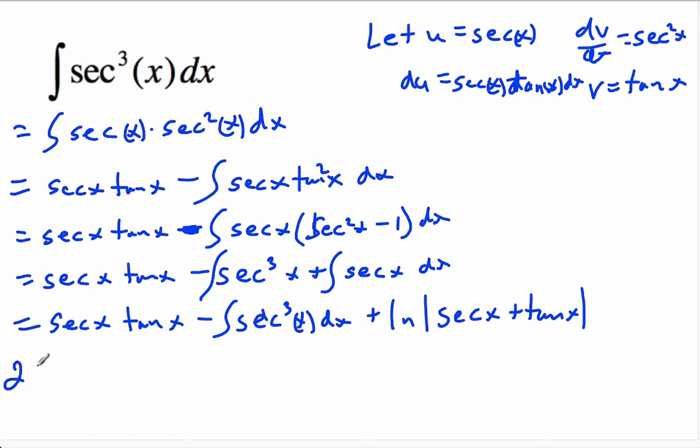We get twice the integral of secant cubed x dx equals secant x tan x plus ln secant x plus tan x.